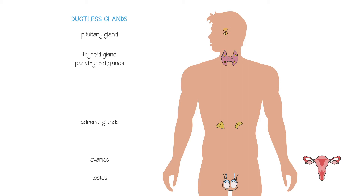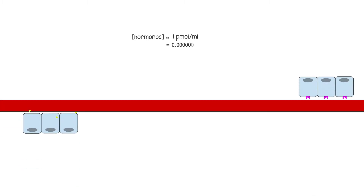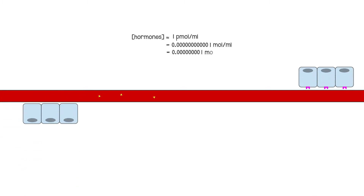However, many hormones are secreted by organs which have other functions, including the kidney, heart, and even the fat cells. Levels of hormones in the blood are very low, often measured in picomoles per milliliter, but that's enough to activate their receptors on target tissues.